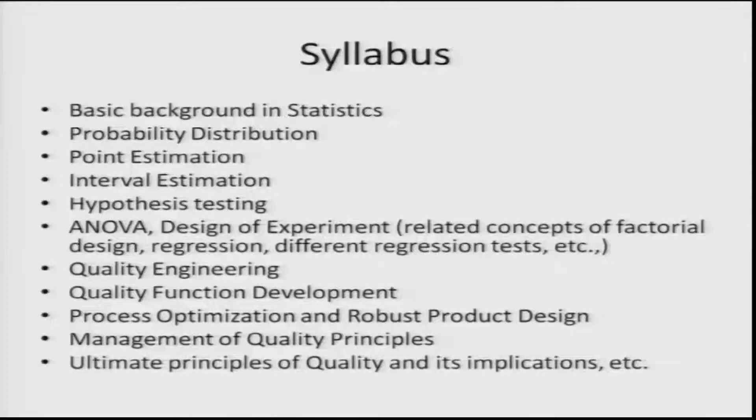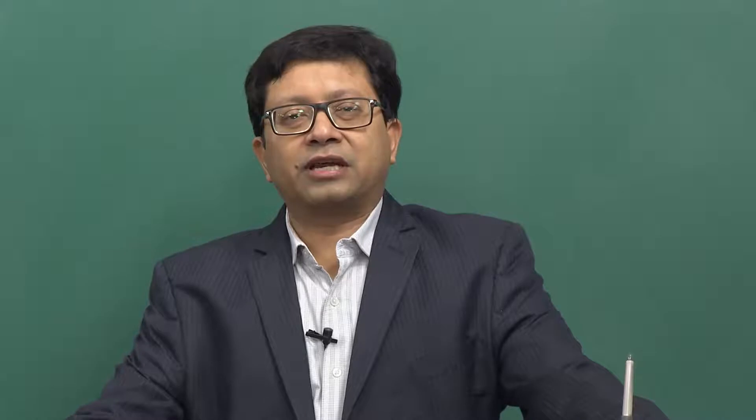We will go in depth into the basic background in statistics, covering concepts of probability distributions, expected value, and variance — expected value coming from the first moment, variance from the second moment. We will briefly discuss the scale parameter, location parameter, and shape parameter for distributions, and how these affect the expected value and variance. Very simple examples will be discussed in the initial part.